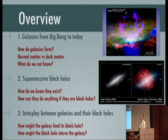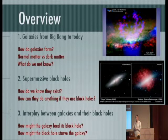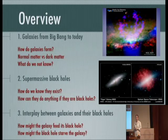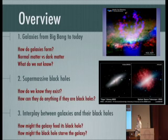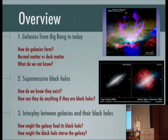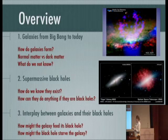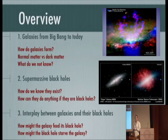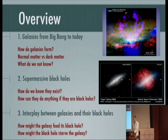We will start with an overview of how galaxies form from shortly after the Big Bang to modern day. I will discuss differences between normal matter and dark matter, then a list of outstanding issues we do not understand. Then I will shift gears and talk about supermassive black holes — how do we know they exist? You may have heard that once things fall into a black hole nothing can get out, so we will discuss what black holes can actually do. And then I will talk about the surprising role supermassive black holes play in the evolution of their host galaxies — how the galaxy feeds the black hole and how the black hole starves its host galaxy.